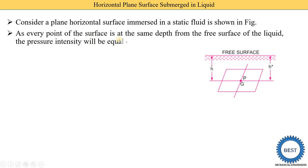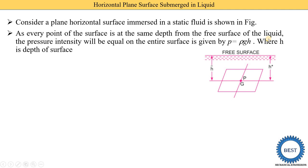Every point of the surface is at the same depth from the free surface of the liquid. This hydrostatic fluid applies certain pressure on the horizontal surface. The total pressure force is the force exerted by the static fluid on a surface — here our surface is horizontal, so the force is applied by the fluid on the horizontal surface. This force is normal to the surface, meaning 90 degrees to the surface, so the total pressure force acts vertically to the surface.